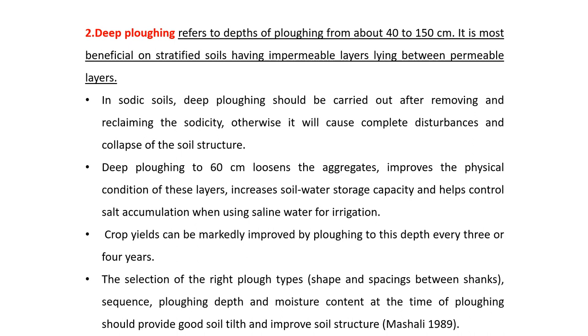The selection of the right plow types — including shape and spacing between shanks, sequences, plowing depth and moisture content at the time of plowing — should provide good soil tilth and improve soil structure.